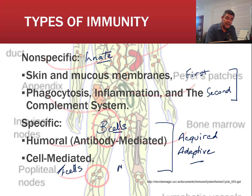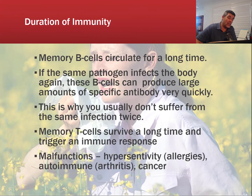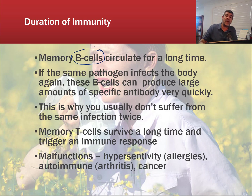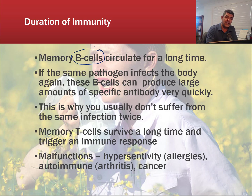Both B cells and T cells are associated with memory, and it's the memory that's an important component as we look at different types of immunity and how responses change on secondary exposure. This system works so well because memory cells circulate for a long time, particularly B cells that can clone themselves into plasma cells and release large quantities of antibodies. If the same pathogen infects the body again, the B cells are already on hand, responding very quickly to produce large amounts of specific antibodies in a very short period of time.